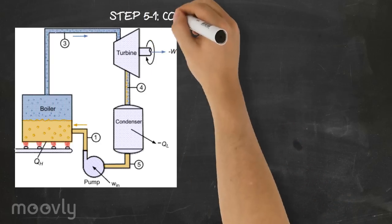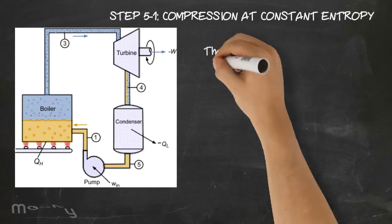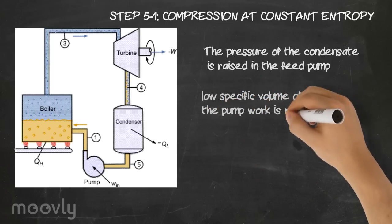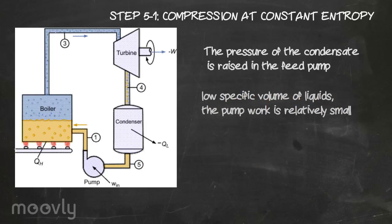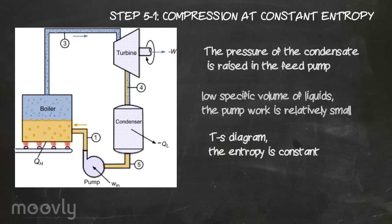Now, step 5 to 1 is compression at constant entropy. The pressure of the condensate is raised in the feed pump. Because of the low specific volume of liquids, the pump work is relatively small and often neglected in the calculations. In the TS diagram, you see here that entropy is constant.